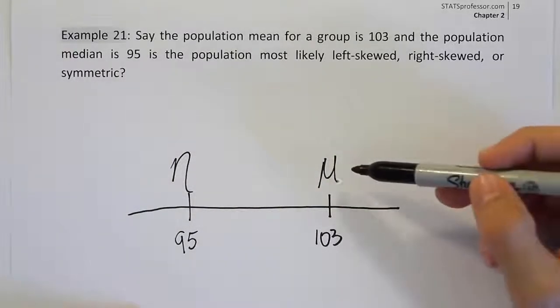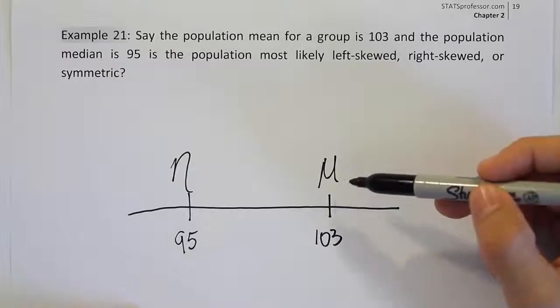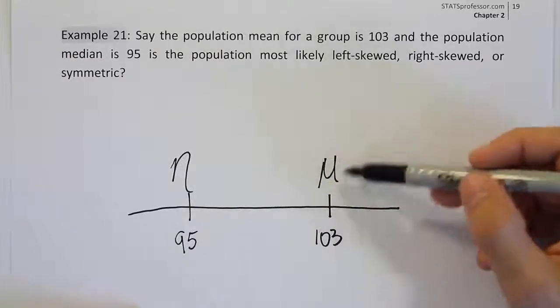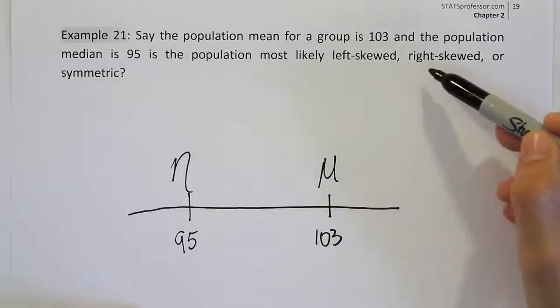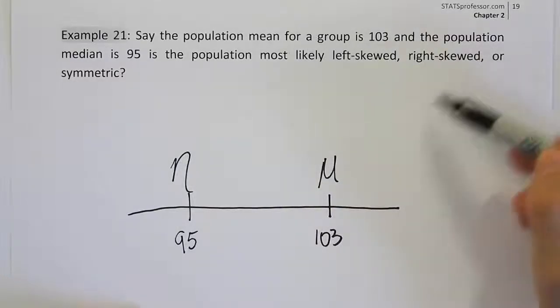Remember, all you have to do to figure out whether it's most likely right skewed or left skewed is to figure out what side the mean is on. On this piece of paper, the mean is on the right-hand side.